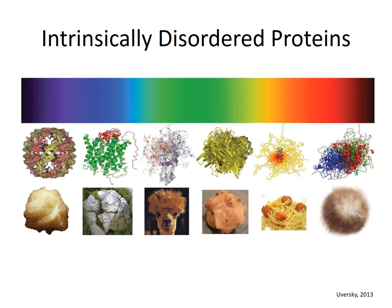There is a long-standing assumption that the unique three-dimensional structure of a protein determines its function. However, there is a whole class of proteins that break this assumption. These are called intrinsically disordered proteins, and they come in many flavors. They can be entirely disordered, partially disordered, or conditionally disordered. They can have long stretches of disorder or short stretches. And most importantly, there is a huge body of research showing that these intrinsically disordered proteins and protein regions are often functionally important.